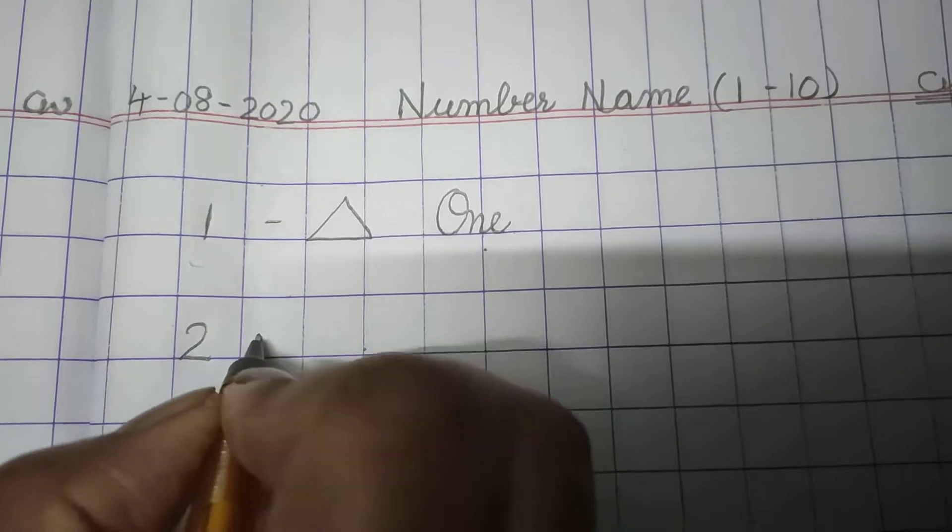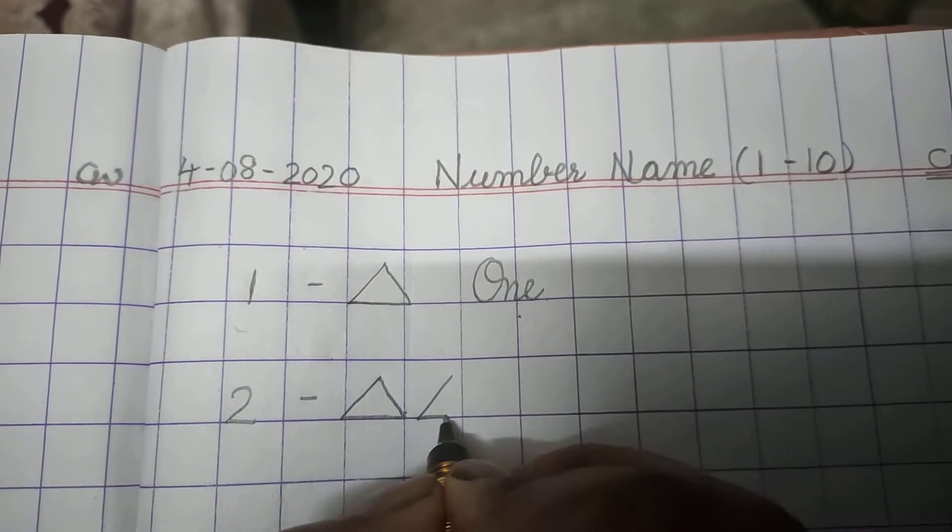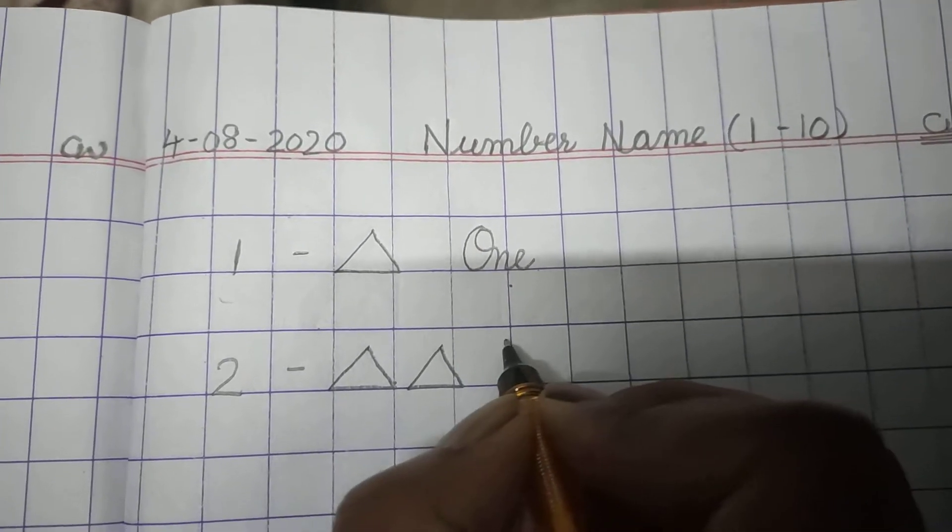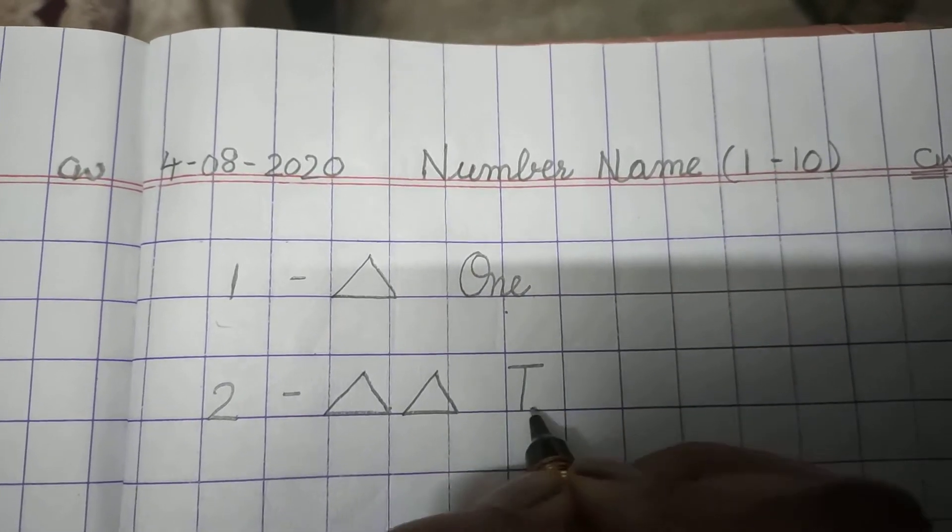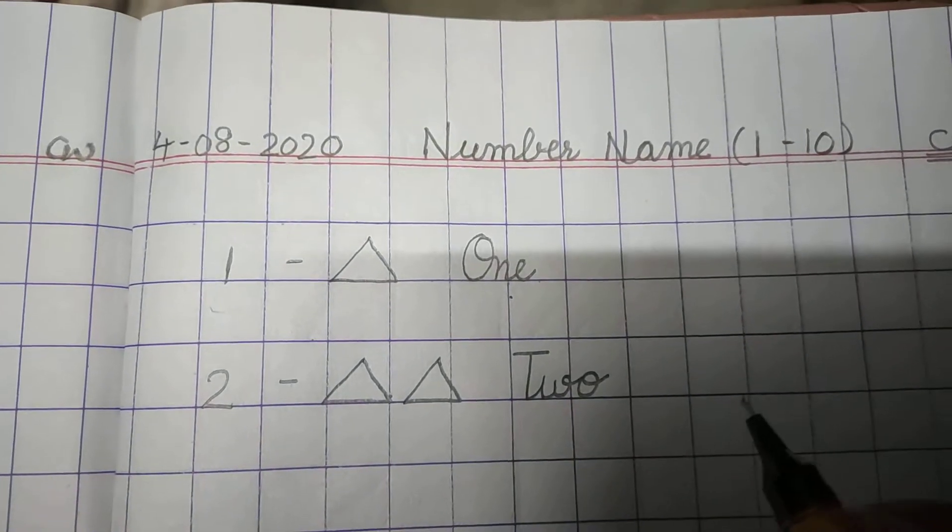2. Now make 2 triangles. 2, 1, 2. And spellings of 2: T-W-O, 2.